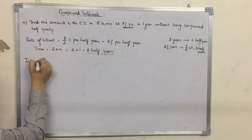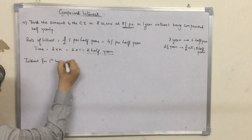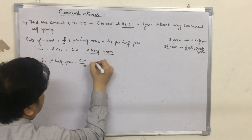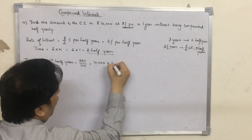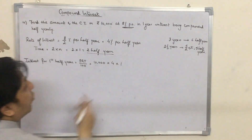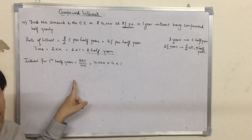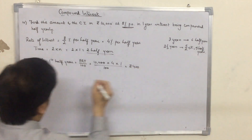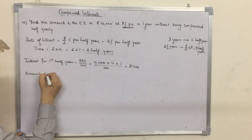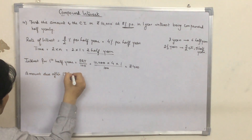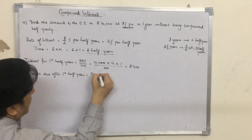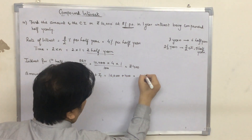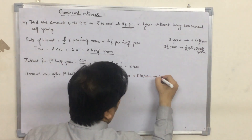We have to calculate for 2 half years. So we first find the interest for the first half year, given by PRT upon 100. The principal is 10,000, the rate of interest is 4%, and the time is 1 because we are only calculating it for the first half year, divided by 100. This gives 400 rupees. Next we find the amount due after the first half year: P plus I1 = 10,000 plus 400 = 10,400 rupees. This acts as the new principal for the next half year.